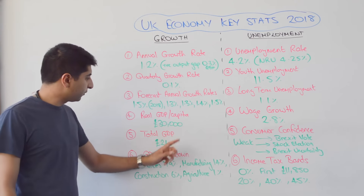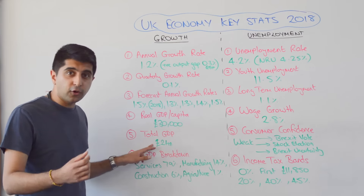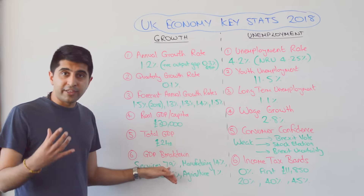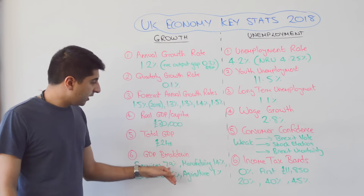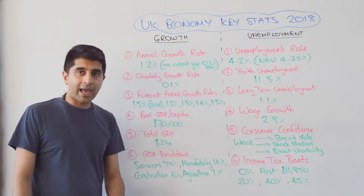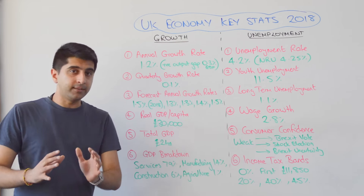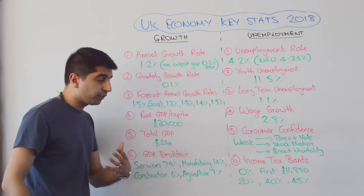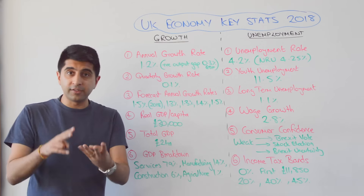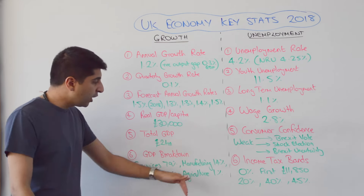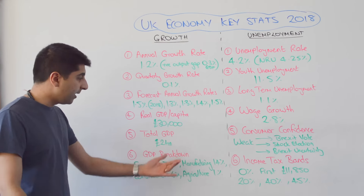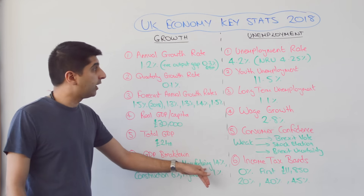Income per head stands at £30,000. Total GDP — the size of the economy — is £2 trillion. How is that made up? Well, 79% of the output we produce is services, 14% is manufacturing, 6% construction, and 1% agriculture. That tells you just how unbalanced our economy is — heavily towards services, in particular financial services, banking, legal, and education services. No wonder big weaknesses in the pound haven't fed through to significantly higher growth rates, because our manufacturing sector is very low.